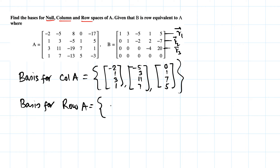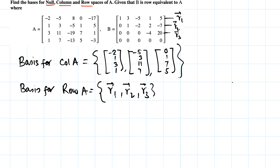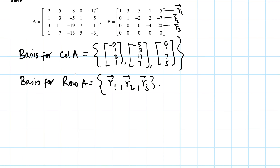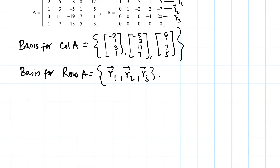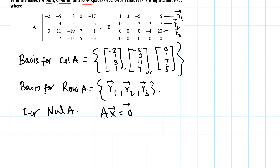We write R1, R2, and R3 as horizontal vectors — I'll save time by not copying them out fully. The nonzero rows of the echelon form give us the basis for the row space. Now for the null space, we need to do more work. We solve Ax = 0 using the echelon form B.